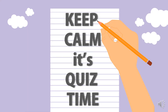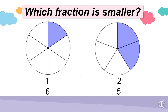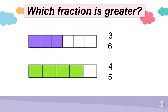Now get ready with a piece of paper and a pencil because it's time for some quiz. Are you ready? Look at the figures. Which fraction is smaller: 1 over 6 or 2 over 5? The answer is 1 over 6. Which fraction is greater: 3 over 6 or 4 over 5? As you can see, the fraction strip for 4 over 5 is shaded more, so 4 over 5 is the greater fraction.